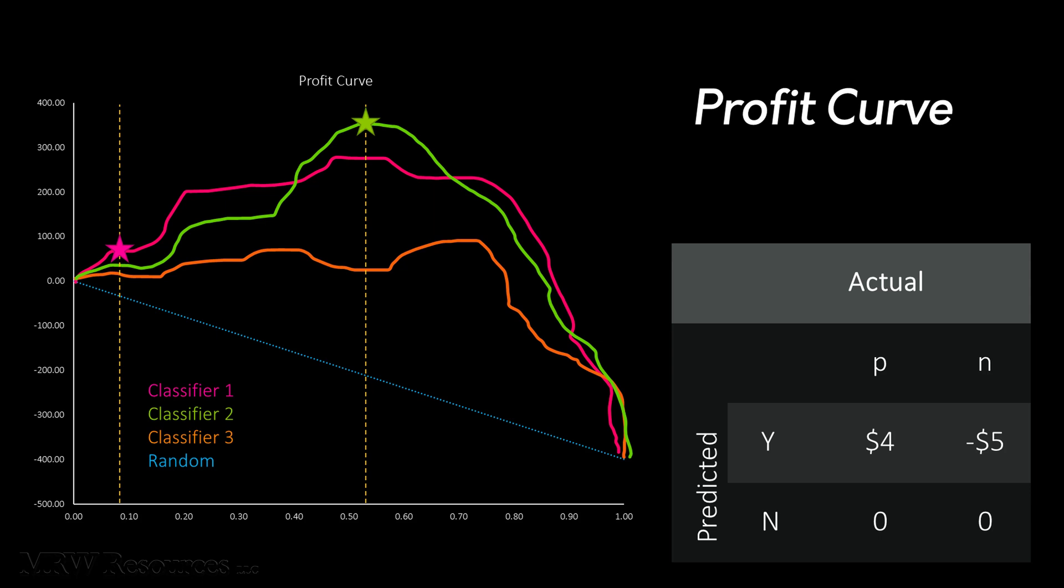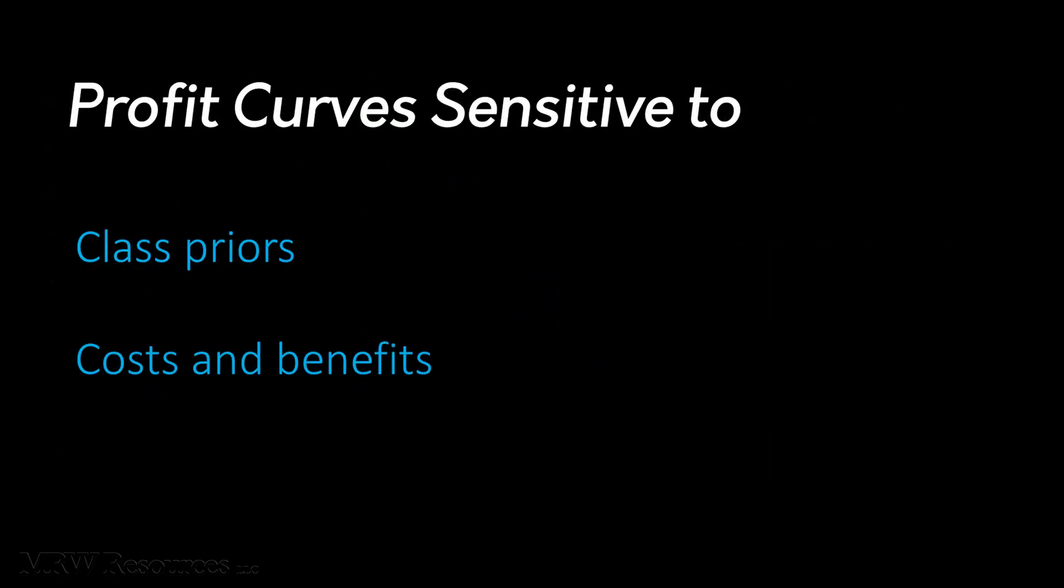Now, profit curves are extremely sensitive to the assumptions in your model. First, they're sensitive to your class priors. A small change in class distribution can result in significant changes to your profit curve.